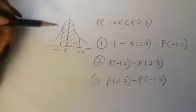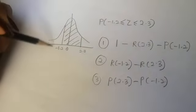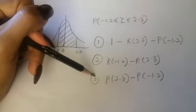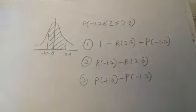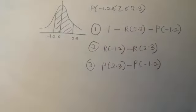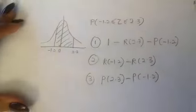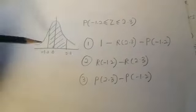When you have a curve like this, there are three ways to calculate it. Let's say you want to find the probability from negative 1.2 to 2.3. What are the three ways we can do it?